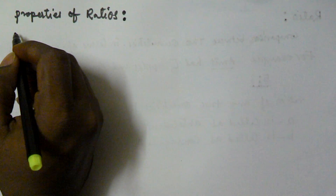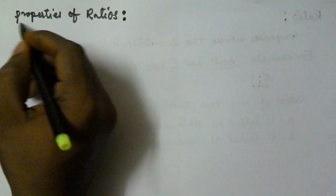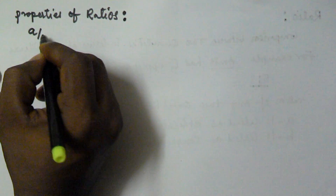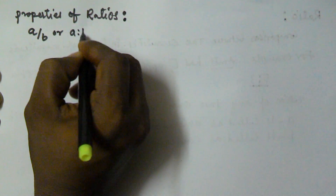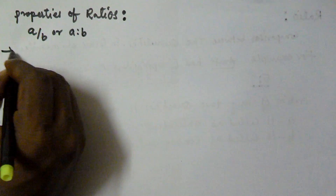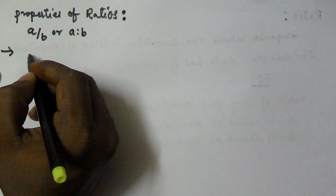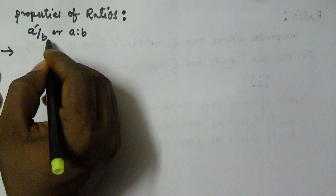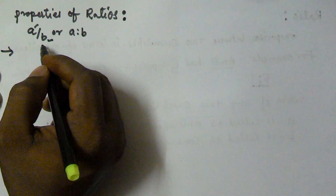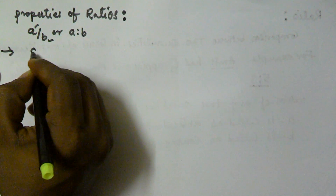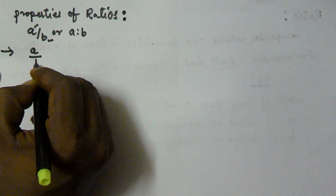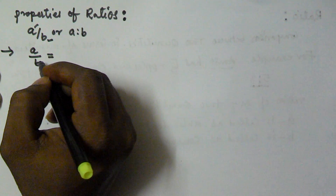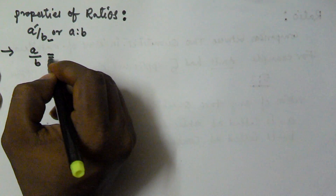Hello friends, in this video I will explain the properties of ratios. Let us assume we have a ratio a by b, or a colon b. The first property is: the value of the ratio does not change when the numerator and the denominator are both multiplied by the same quantity. Suppose we have the ratio a by b — if you multiply numerator and denominator by the same number, the ratio is not going to be changed.